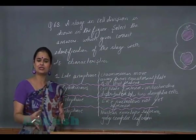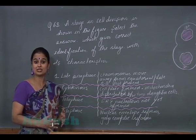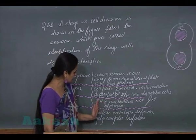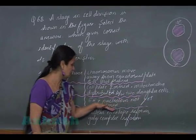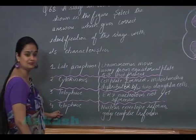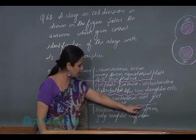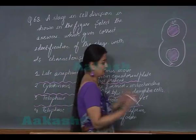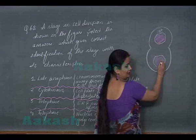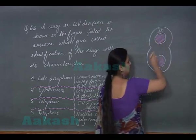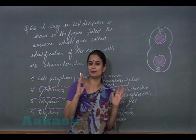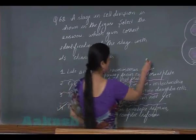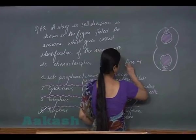Telophase is the reverse of prophase — nuclear membrane, endoplasmic reticulum, and Golgi bodies reform. One option states that ER and nucleolus are not yet reformed, making it incorrect. The last option states that nuclear envelope reforms along with Golgi complex, ER, and nucleolus — two daughter nuclei form and all organelles reappear. Therefore, the correct answer for question 68 is option 4.